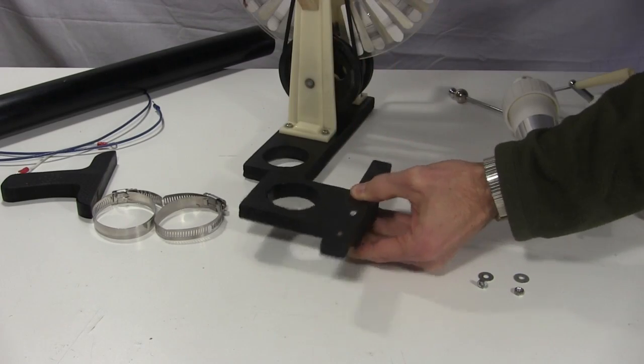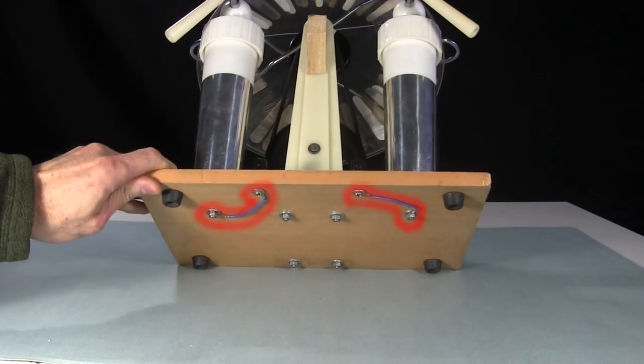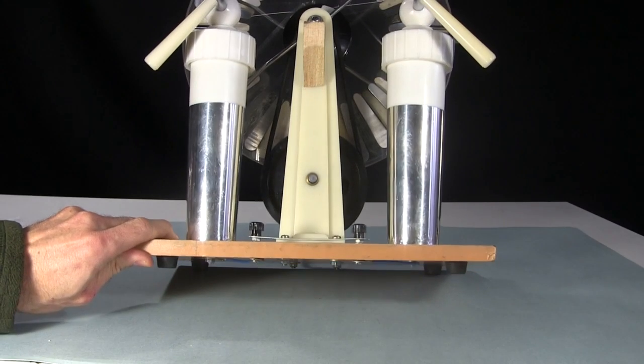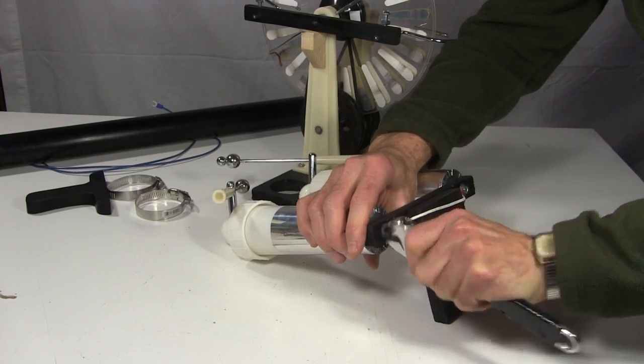Next came putting together the base for the two Leiden jars. Most people don't know it because it's usually hidden, but the outer cylinders for the two Leiden jars are electrically connected together. And so, in addition to bolting them to the base, I connected them with a wire.